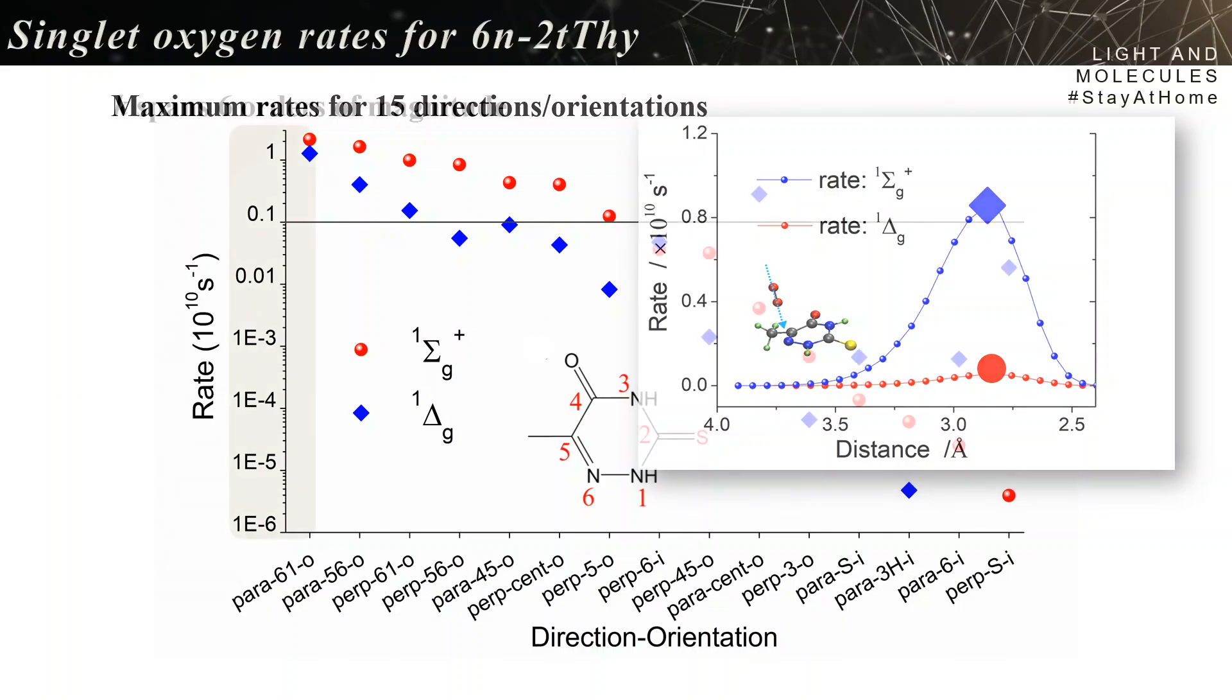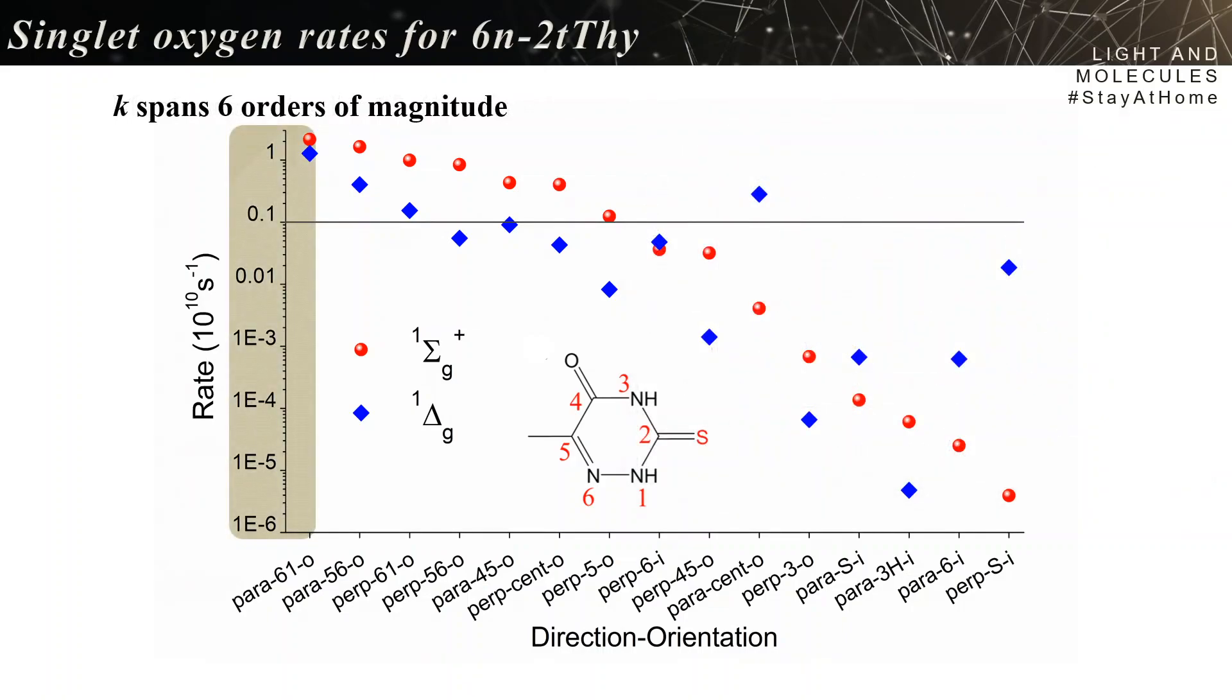The first interesting result about the 15 directions is the large range of the rates that you got. It spans values over 6 orders of magnitude for the rate. It's huge.